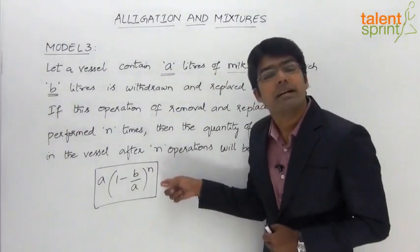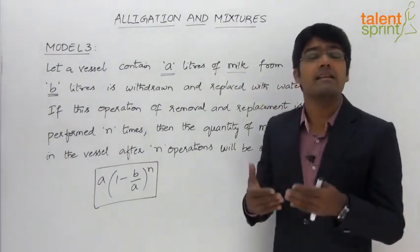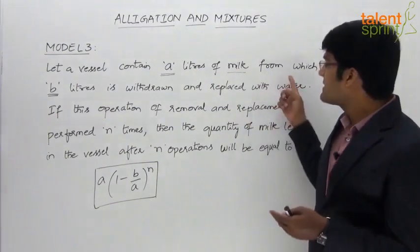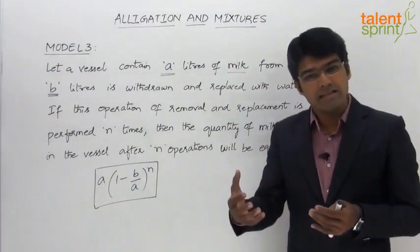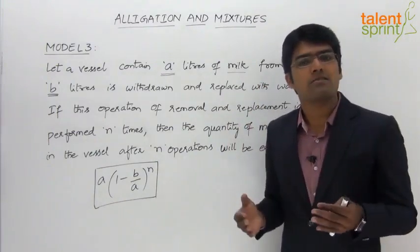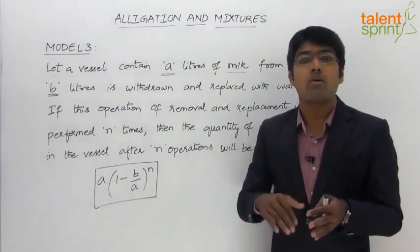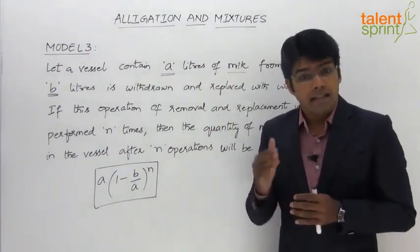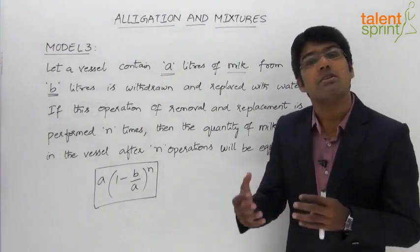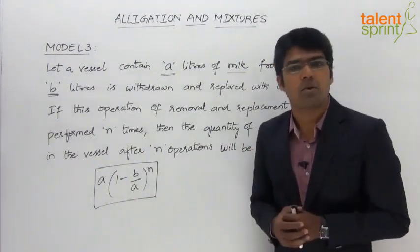Let us understand the reason behind using this compounding formula. Initially the vessel contains A liters of pure milk without any water. Out of this A liters, B liters is withdrawn and replaced with B liters of water. So after the first operation, the vessel which initially contained A liters of milk now has a mixture of milk and water. When we try to remove B liters from it again, we cannot get pure milk — we will get a mixture of milk and water. So we remove B liters of mixture and replace it with B liters of pure water.